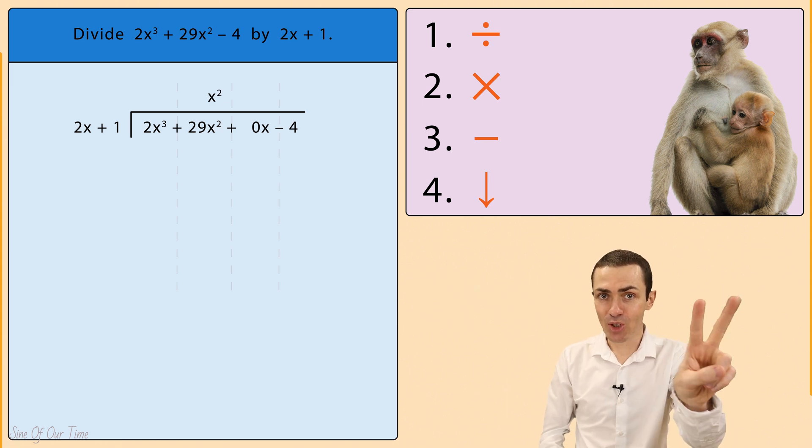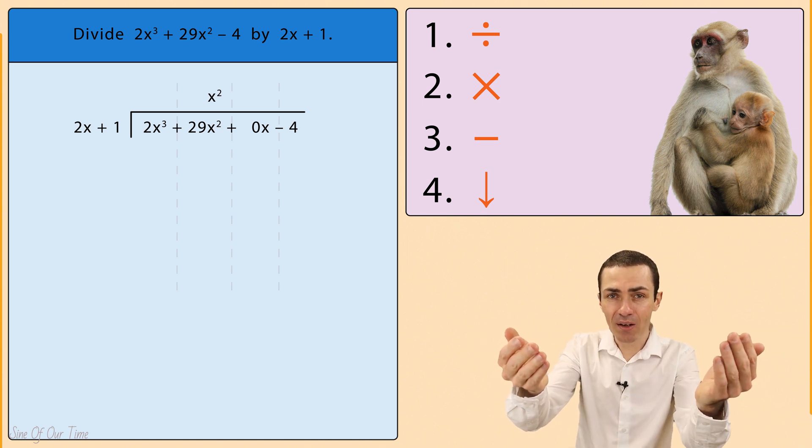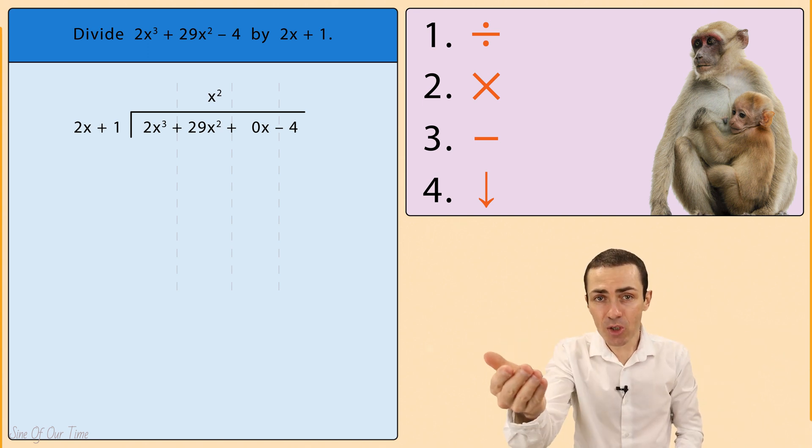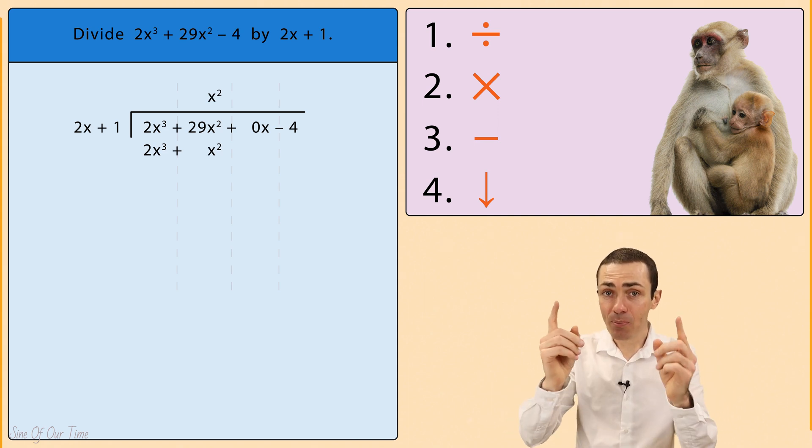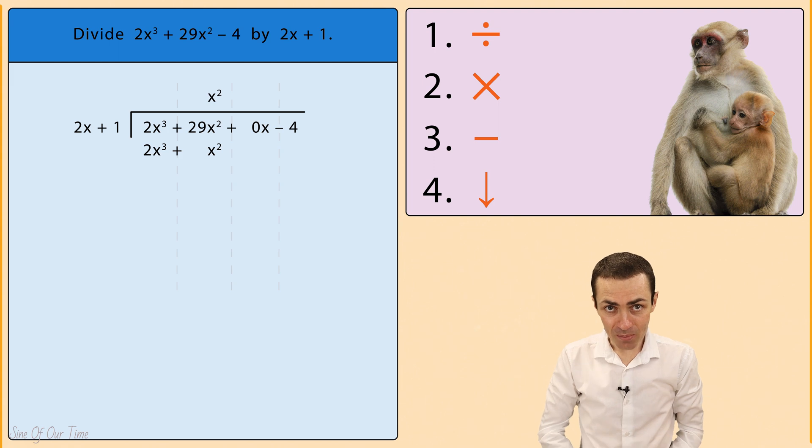Time for step 2: Multiply. We take that x squared and we multiply by 2x plus 1, which gives us 2x cubed plus x squared, which we put in the appropriate columns in a new line below the long division symbol.